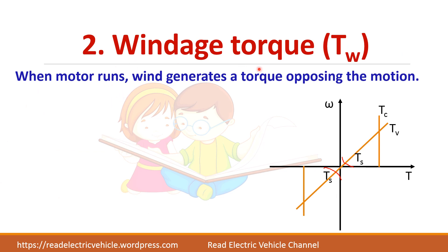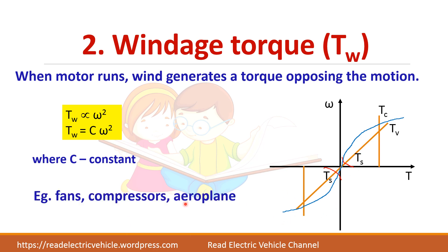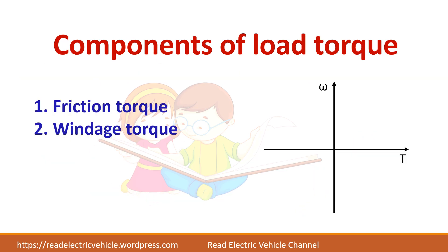Windage torque: when the motor runs, wind opposes its motion — that torque is called windage torque. It is proportional to the square of the speed (ω²). Adding all friction components plus windage torque and plotting them in the speed-torque plane gives a combined curve. Windage torque is dominant in fans, compressors, and aeroplanes.